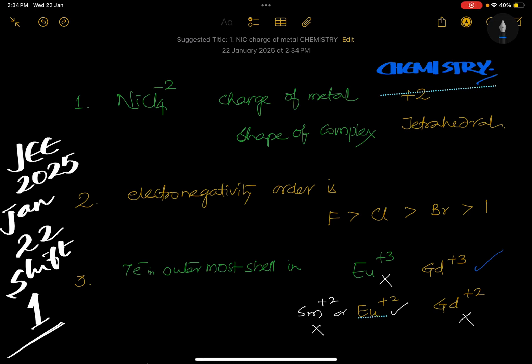JEE Main 2025, January 22nd, Shift 1. We have 15 questions here. Just have a look at these questions, don't try to solve anything, just see what type of questions are coming. First question is nickel tetrachlorite, shape of the complex and charge of the metal.